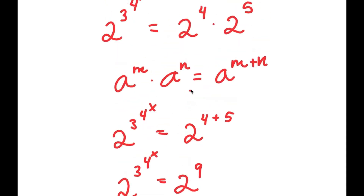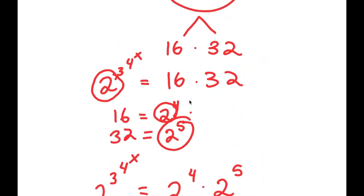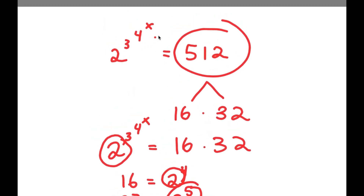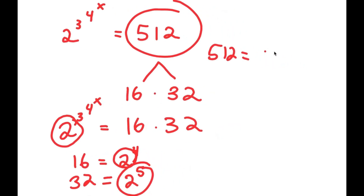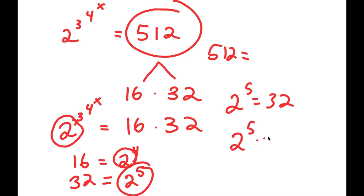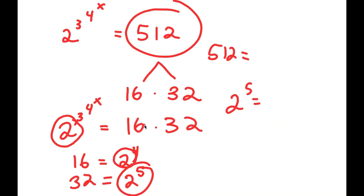Also, instead of doing all that, remember we had at the start 2 to the power of 3 to the power of 4 to the power of x equals 512. We know that 2 to the power of 5 is 32, so 512 is 2 to the power of 5 times 2 to the power of 4, which is 2 to the power of 9. We could have just said at the start that 512 equals 2 to the power of 9, but some people don't know that, so that's why we did all of that.